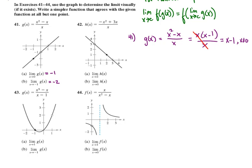We'll go on to number 43. We're first just going to look at the graph and evaluate the limits. The limit as x approaches 1 of g of x, that's 2. The limit as x approaches negative 1 of g of x is 0. We can see those clearly just by looking at the graph.